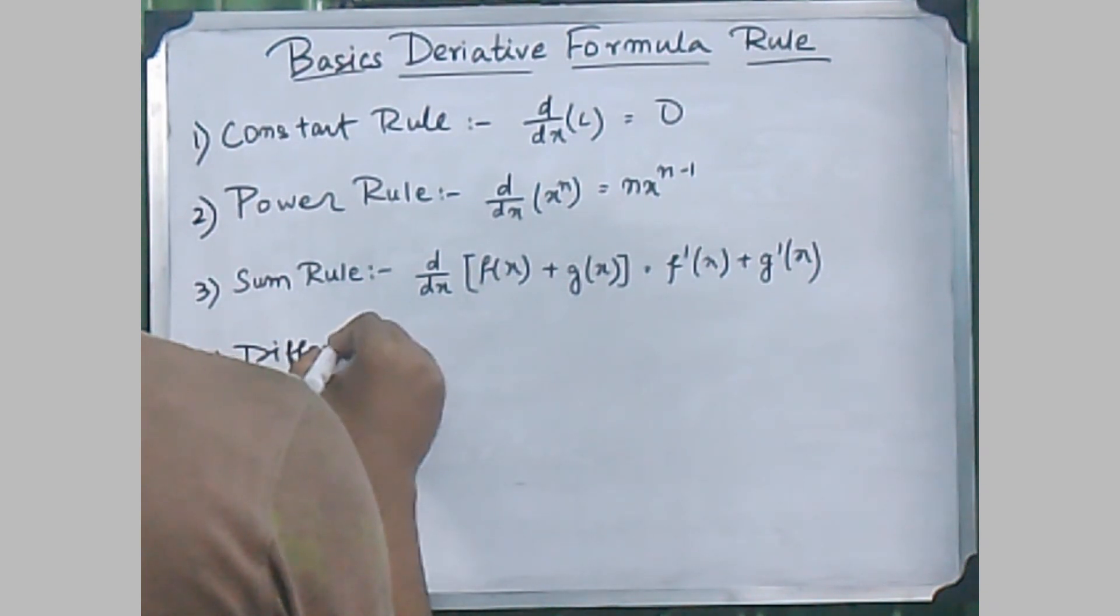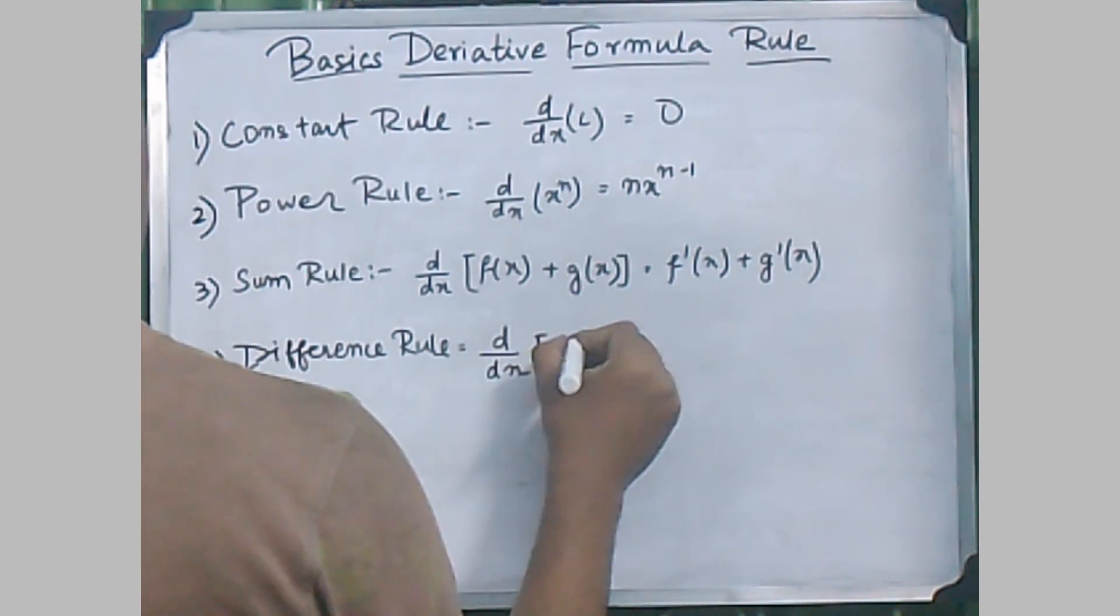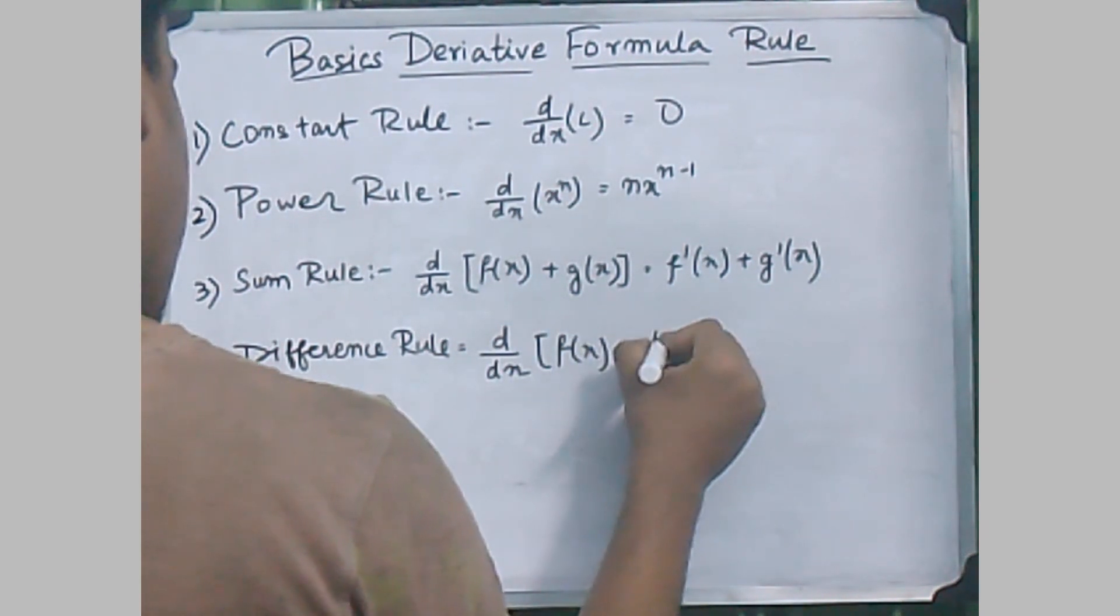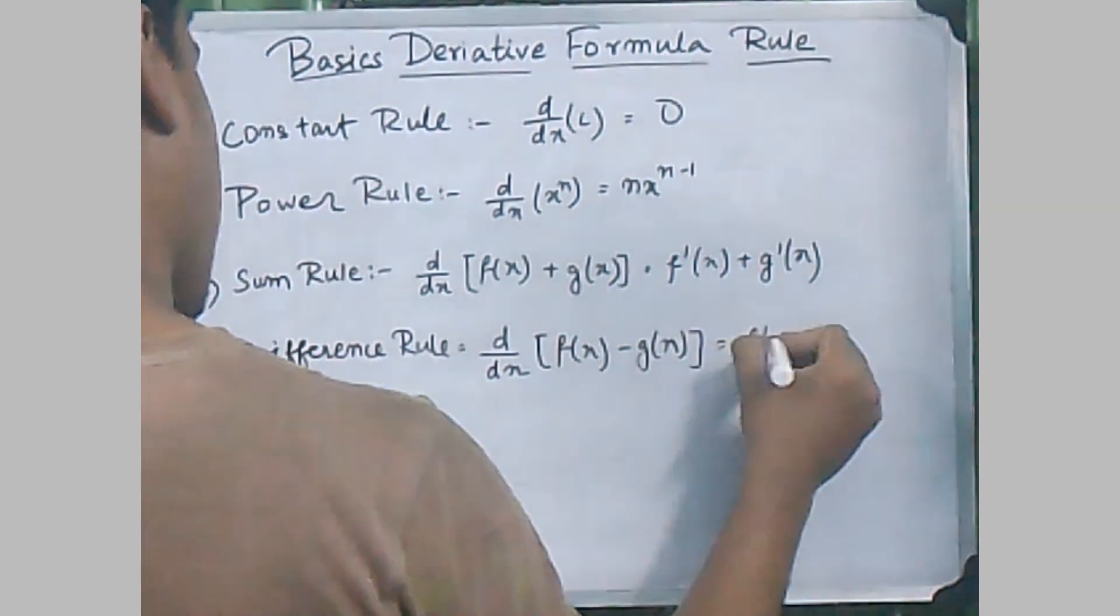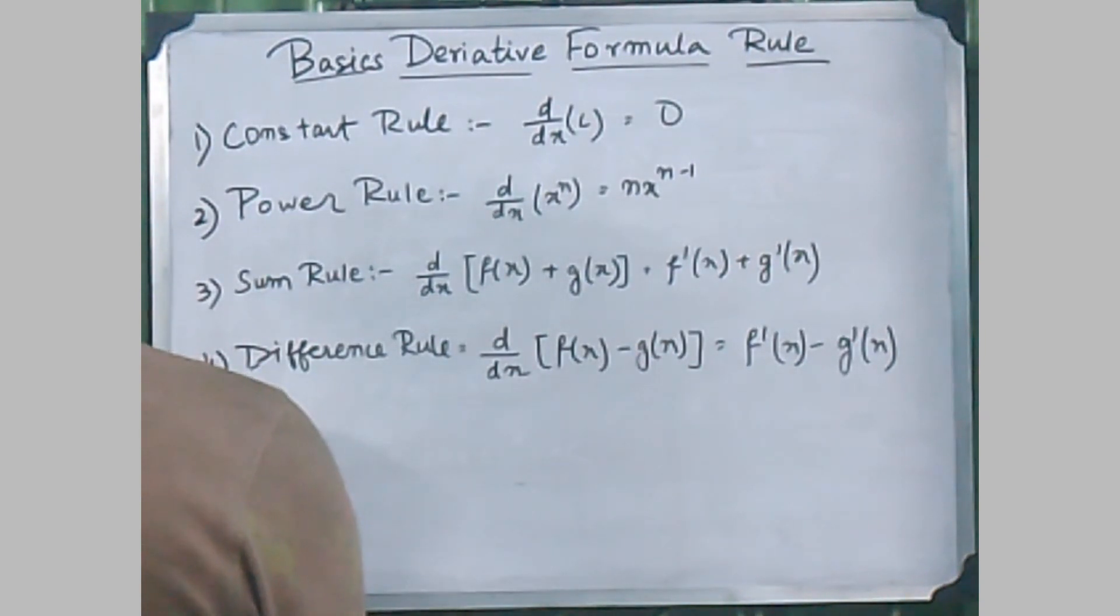The fourth rule stands for the difference rule, where d/dx of [f(x) - g(x)] will result to f'(x) - g'(x).